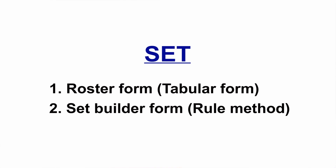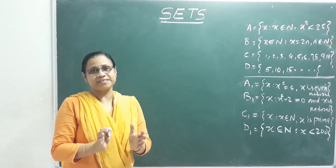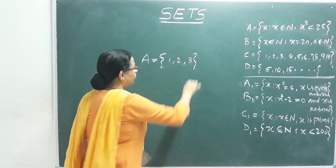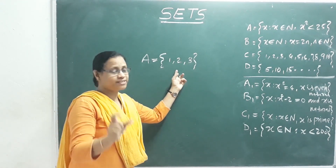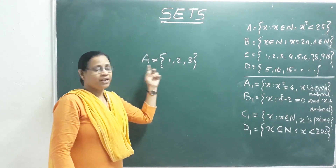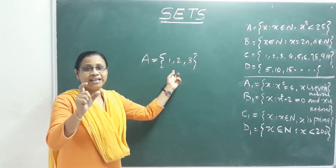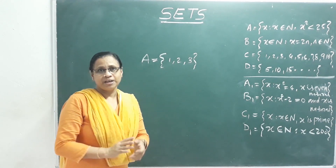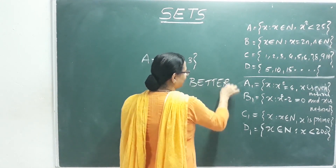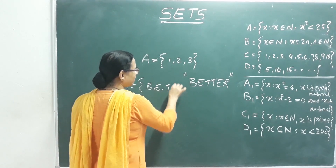In roster form, elements are listed inside curly brackets separated by commas. The set is denoted by a capital letter, while elements are denoted by small letters. Importantly, there is no repetition in a set. For example, the word BETTER — B, E, T, T, E, R — in set form becomes {B, E, T, R}, with no repeated letters.